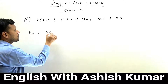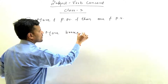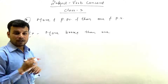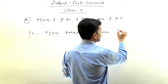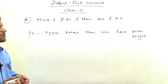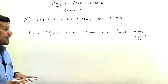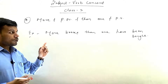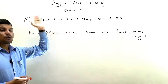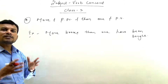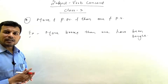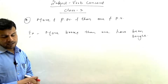For example: 'more books than one have been bought' — here 'books' is a plural noun placed between 'more' and 'than one,' so we use plural verb 'have been bought.' The rule is: look at the noun. If the noun in 'more than one' structure is singular, give singular verb; if the noun is plural, give plural verb.